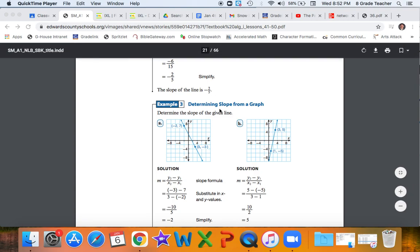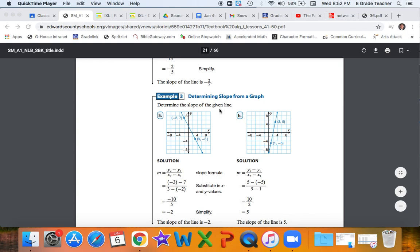Here's an example of how you can find it from a graph. The same thing is true from a set of ordered pairs that you're given or from a table. In a graph, you just take two of the points that are actually on that graph. You might actually pick those points out yourself, or you might be given those points. In this example, you're given those points. Negative two and seven, three and negative three, plug that into our formula.